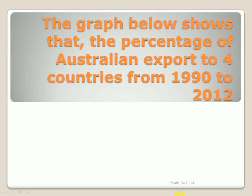Today I am going to discuss about the writing task 1 and the topic is: the graph below shows the percentage of Australian exports to 4 countries from 1990 to 2000.